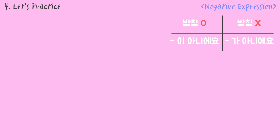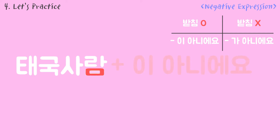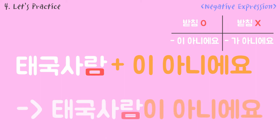If the noun is 태국 사람, there is a 받침 like 미음. It is 이 아니에요. So it becomes 태국 사람이 아니에요.